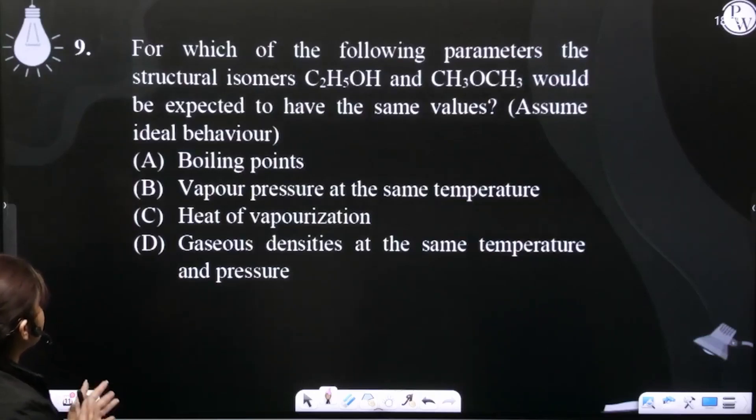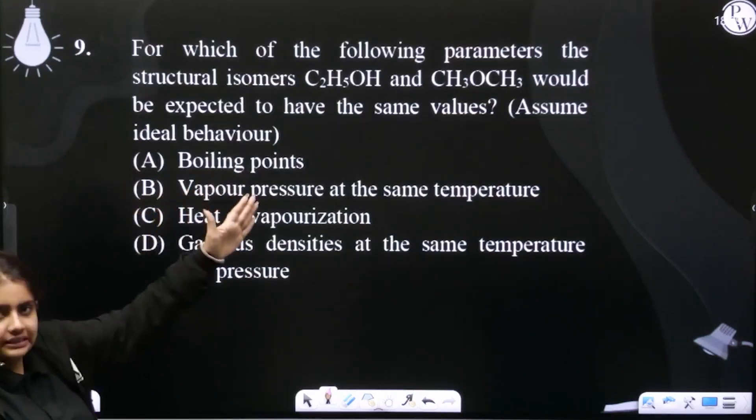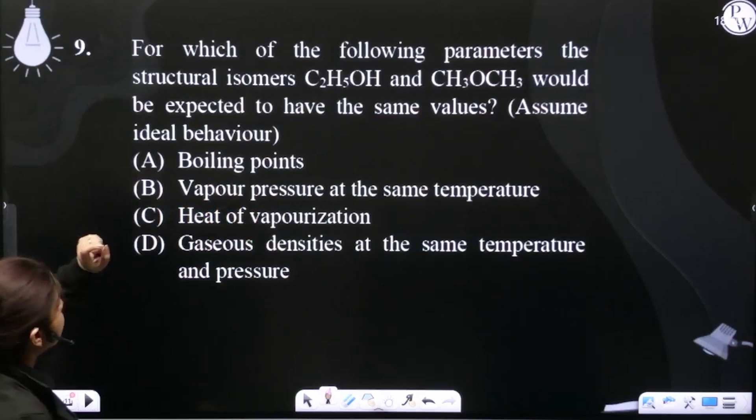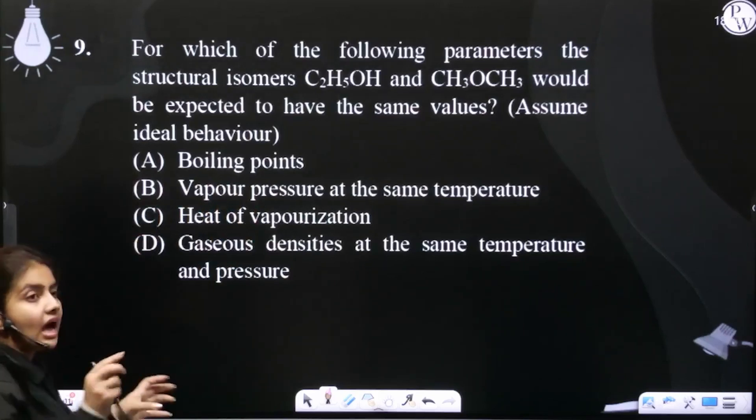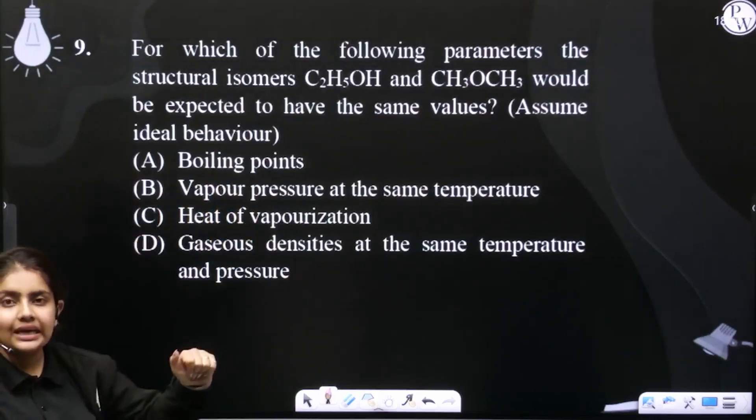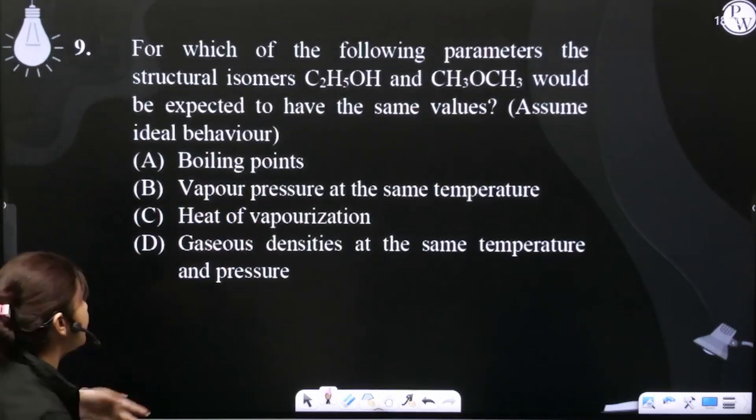For which of the following parameters would the structural isomers C2H5OH and CH3OCH3, one alcohol and one ether, be expected to have the same values? Both are different things - one alcohol, one ether - so both boiling points will be different.